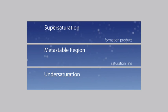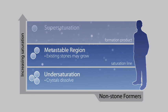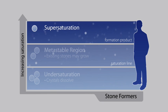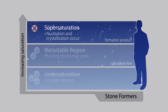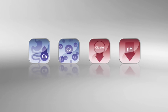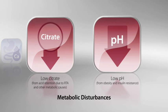Urine saturation and inhibitor levels explain why, in normal patients, large crystals are not formed — their urine is not as saturated, and they have sufficient quantities of inhibitors present. But the urine of patients with kidney stones is more saturated, and may also lack inhibitors that increase the propensity for crystallization of stone-forming salts. There are two reasons for this. First, stone formers are known to suffer from a variety of metabolic disturbances that increase the amount of stone-forming substances excreted in the urine, and also decrease the excretion of inhibitors.